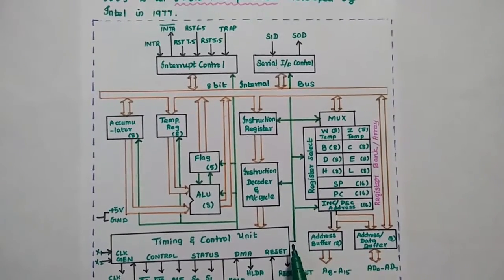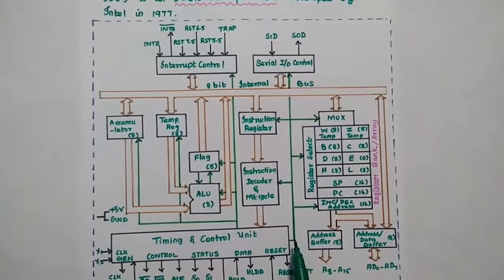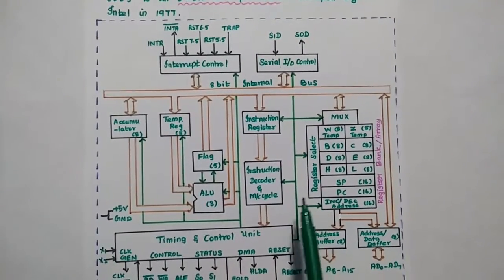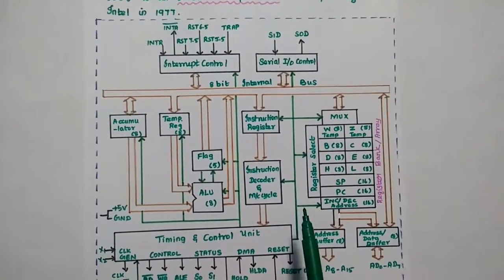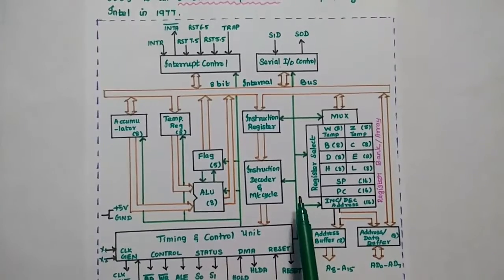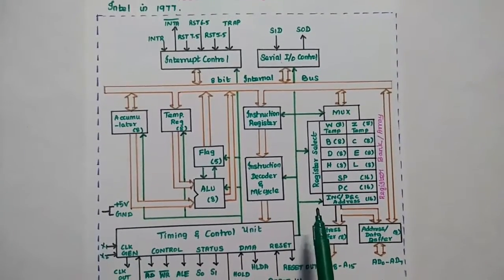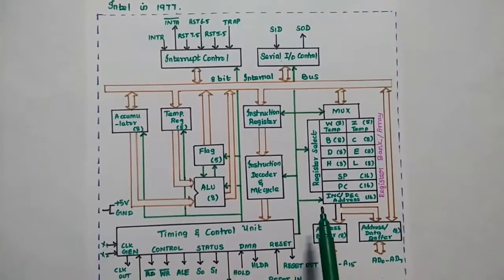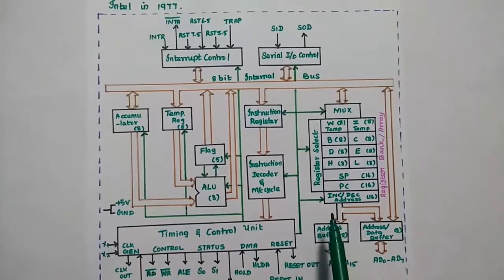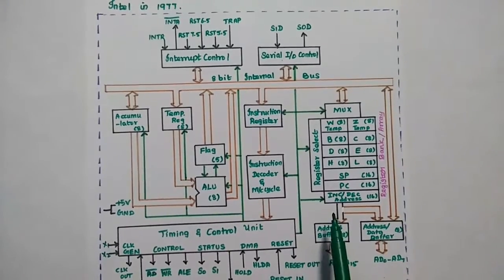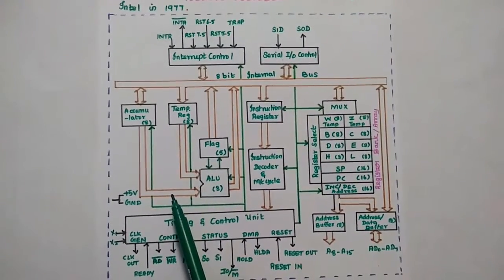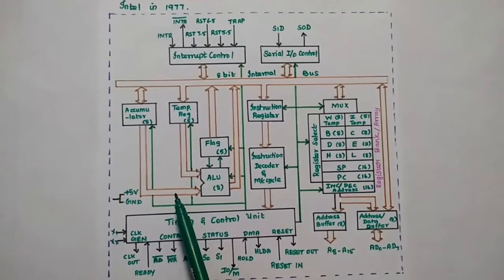There is a control line which can control the function of all the blocks. This single line represents the control line which controls the operations of all the blocks. There is also a double line which represents the bus.